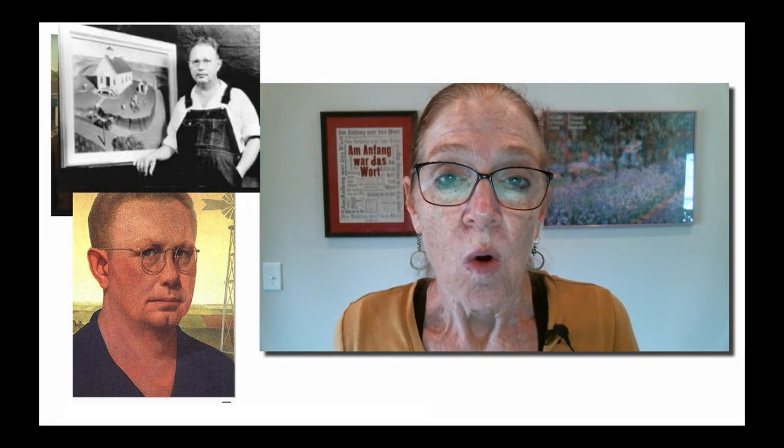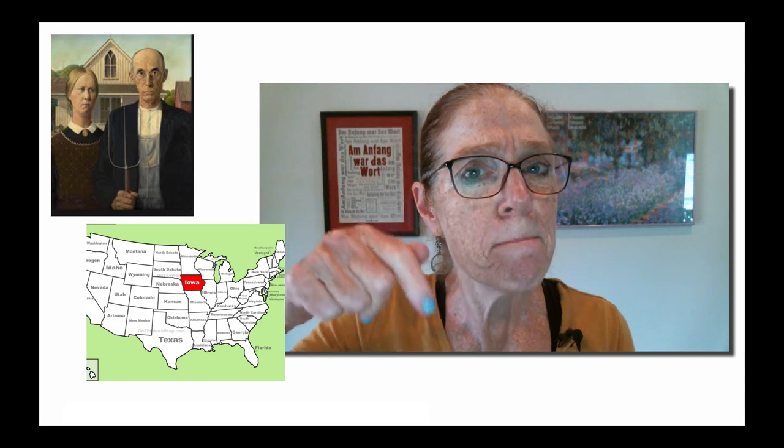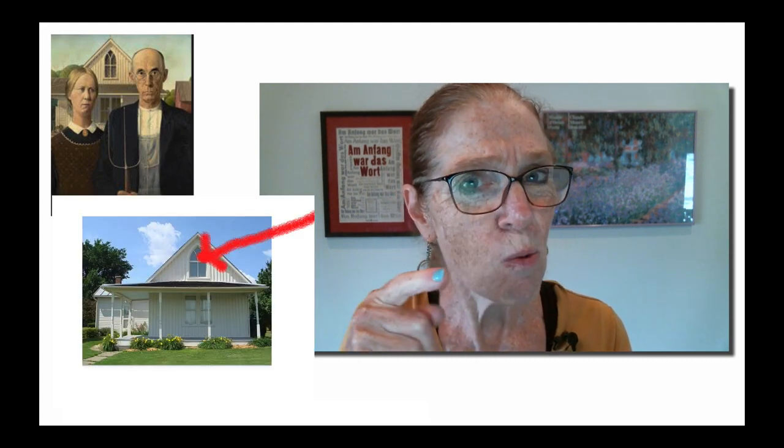Grant Wood, the American painter, the artist, was driving around one day in Iowa. Iowa is a state kind of in the middle of the United States, and he was driving around looking for something to paint. All of a sudden, he saw a small, ordinary, plain white house. But this ordinary, normal white house had a very special window, and he thought, that window is strange, but it would make an interesting painting. I want to paint something with that house in it.